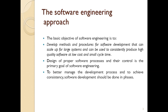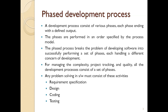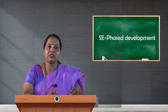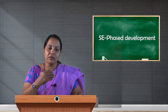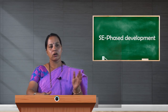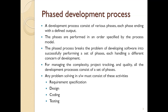The primary goal of software engineering is to better manage the development process and achieve consistency. Software development should be done in phases — what we call a phase development process. A development process consists of various phases, each ending with a defined output. The phases are performed in an order specified by the process model chosen, breaking the problem of developing software into a set of phases, each handling a different concern.